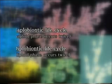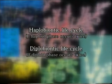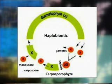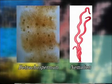If the haploid phase occurs twice, it is called as haplobiontic life cycle, and if the diploid phase occurs twice, the cycle is called as diplobiontic. In the haplobiontic life cycle, the haploid phase occurs twice in the life cycle which alternates with a single diploid zygotic phase. The haploid phase is represented by the gametophyte proper and the carposporophyte. This type of life cycle is found in many members of red algae such as Batrachospermum and Nemalion.